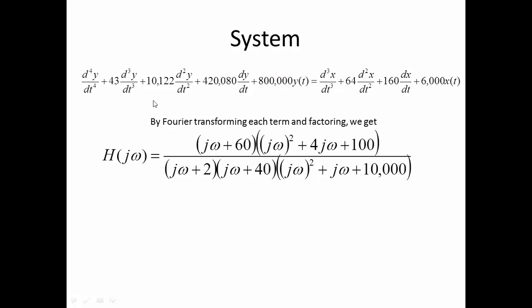So here we have a rather complicated looking differential equation, but when you compute the frequency response, it factors into a first order zero at 60 radians per second and a second order underdamped zero at 10 squared. Well, it's at 10, that's where the 100 is, it's 10 squared.